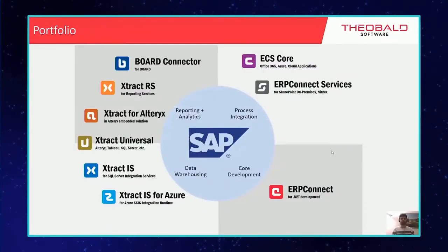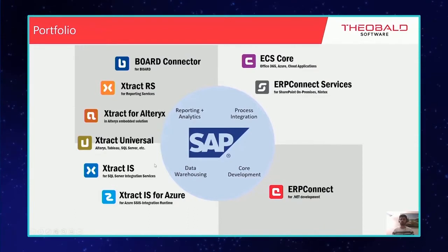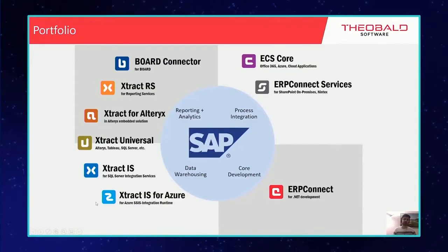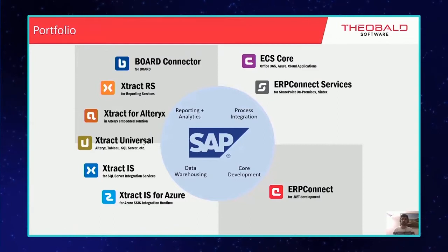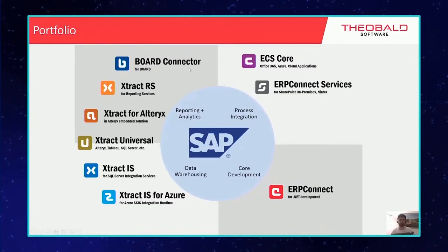Here you can see the portfolio of all the products we offer. On the left side we see our products for business intelligence. That includes products for integration with SQL Server Integration Services — we offer Xtract IS for classical SSIS and Xtract IS for Azure Data Factory. We also offer Xtract IS as a standalone SAP extractor, which will be the focus today. Other products include Xtract for Alteryx, Xtract RS as an SAP connector for Microsoft SQL Server Reporting Services, and a connector for the Power BI platform.